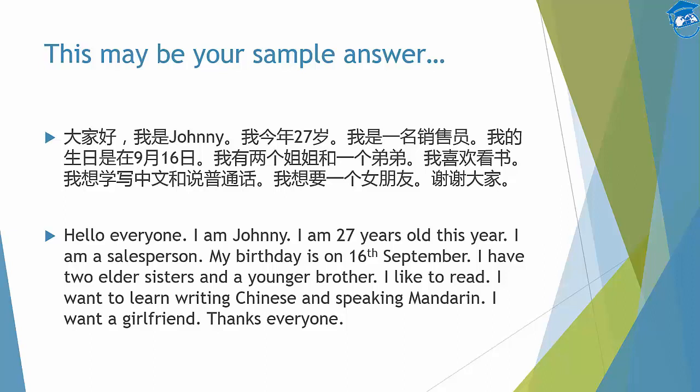My birthday is on 16th September. I have two eldest sisters and a younger brother. I like to read — you can also say I like reading. I want to learn writing Chinese and speaking Mandarin. If you want to say 'I want to learn writing', it is just a direct translation: want is 想, learn is 学, write is 写 — so it's just 想学写, these three words coming together. You can also say 我要学写中文 or 我想学写中文 — they all make sense.